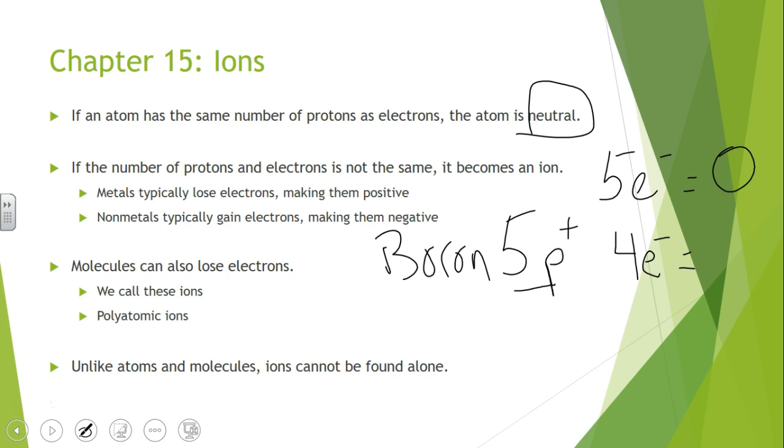So because there's more protons, that means the charge is the difference, which is one, but then which one is more? It's a one-plus charge. It's a positively charged ion. So it has lost electrons. It has gone from five electrons down to four, but because it has lost electrons, it is a one-plus charge because we're comparing the positive and the negative charges.